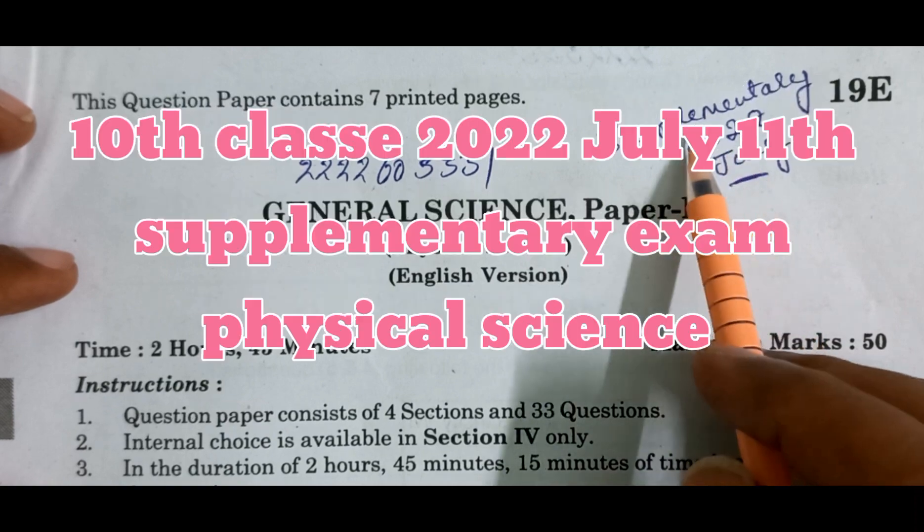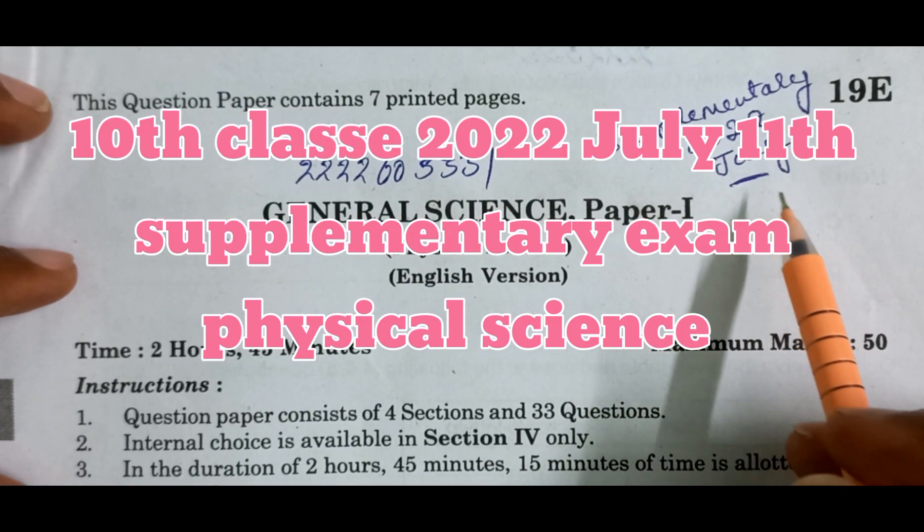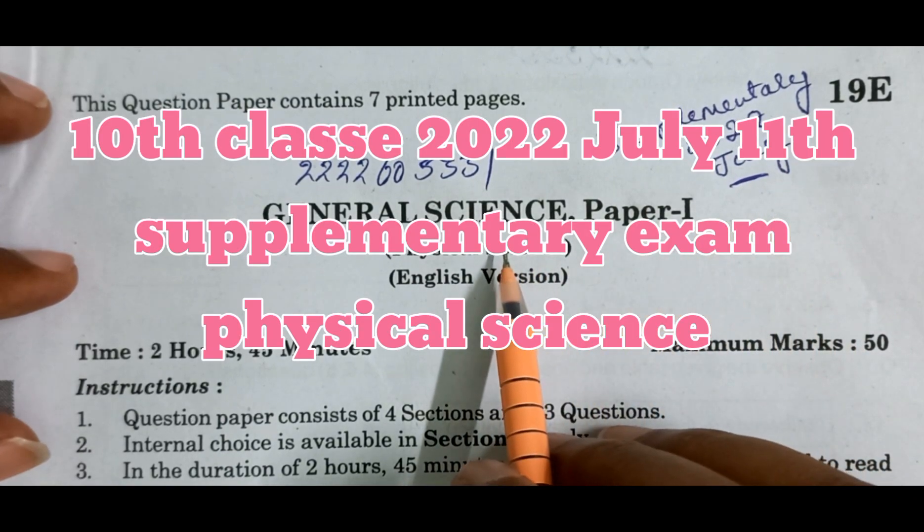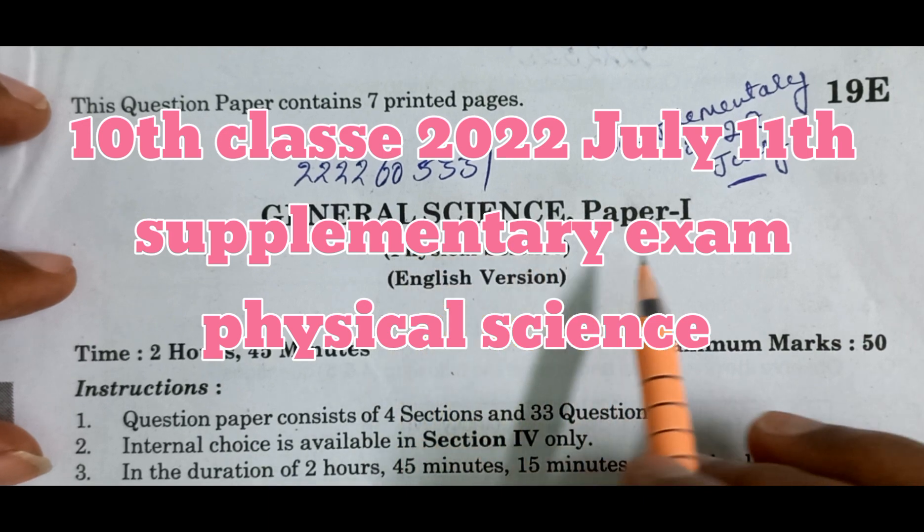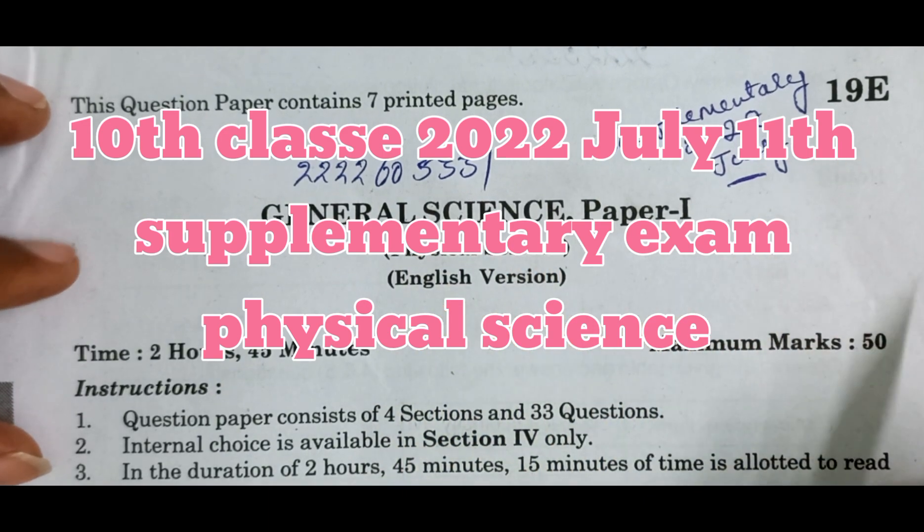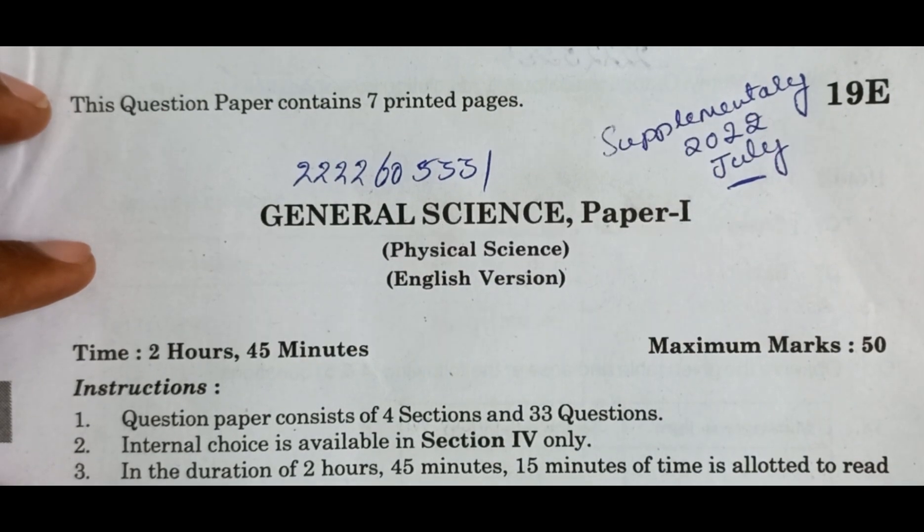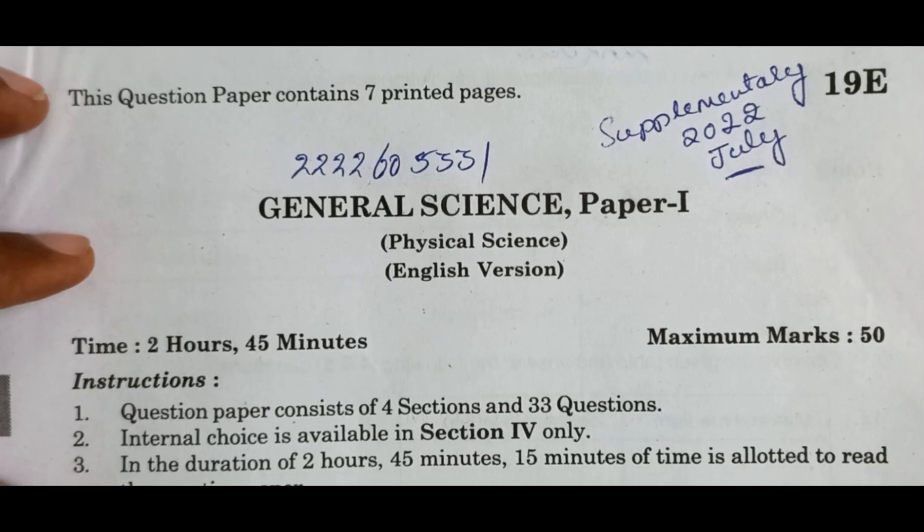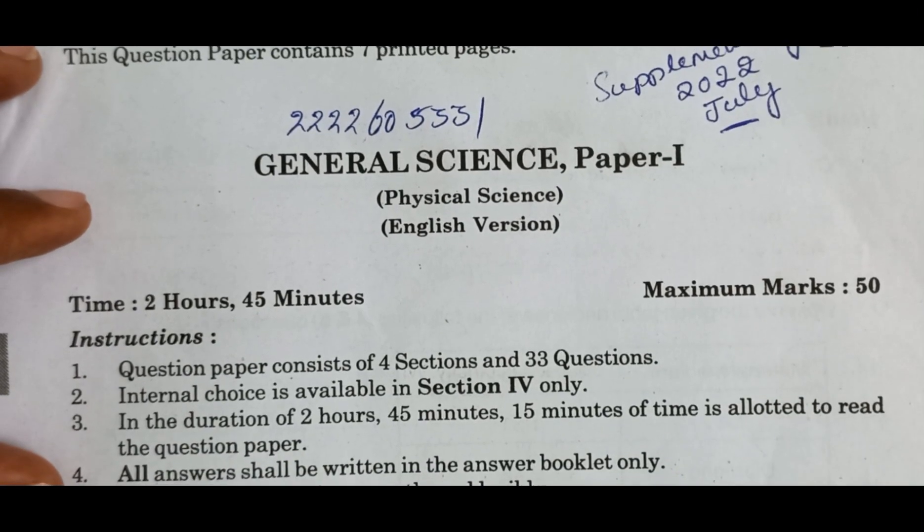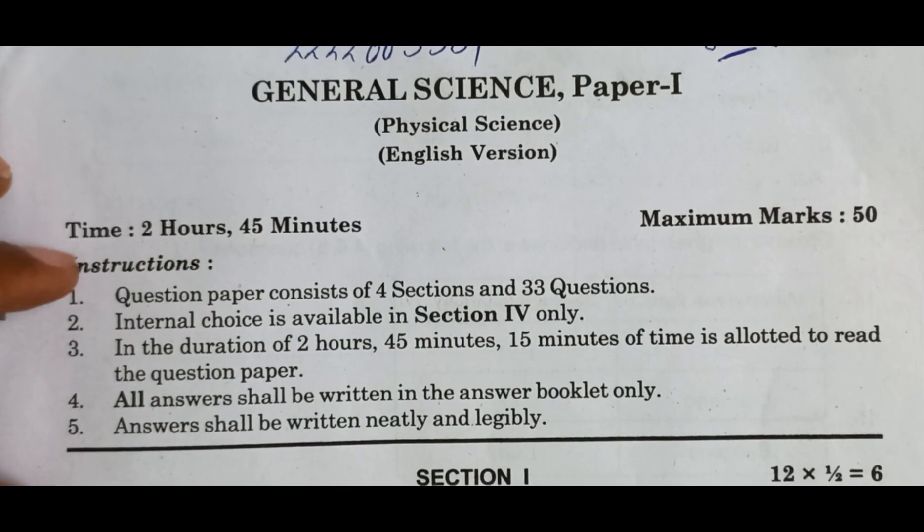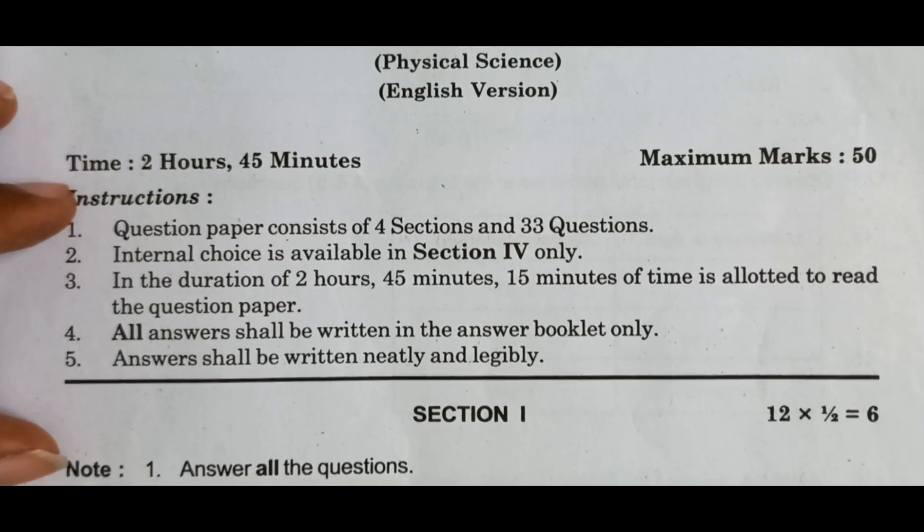So, 2022 supplementary July 10th class examination, General Science Paper One, that is Physical Science. This is 2022 July, 20 questions paper one with more questions, half more questions.